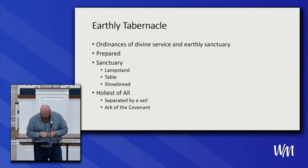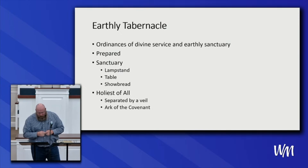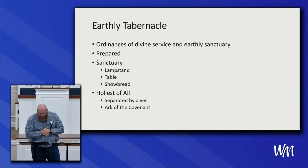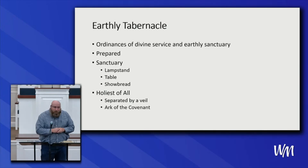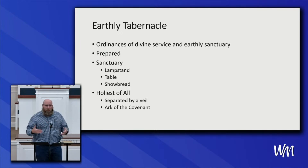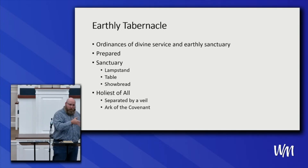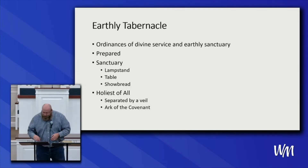Above the Ark of the Covenant were the cherubims of glory overshadowing the mercy seat. The holiest of all contained no image of God — his presence was symbolized by the cloud of smoke that filled the holiest of all when incense was burned in the censer. Israel's God was invisible to them, and only the high priest could enter into that presence once a year, after offering blood for the remission of his own sins before entering.